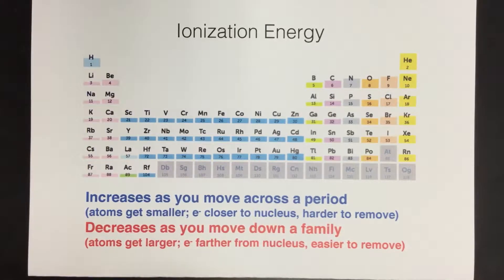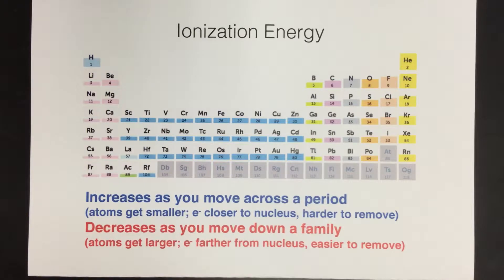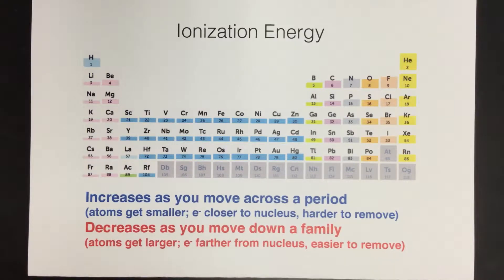This next video is on ionization energy, another periodic trend. We've talked about atomic radius, and I told you that atomic radius is the most important trend because all the other trends can be put into terms of size of the atom. If you feel good about that trend, we can move on to ionization energy. Ionization energy is the idea of how much energy it requires for us to remove the outermost electron from an atom.